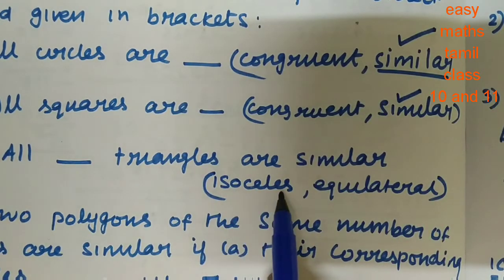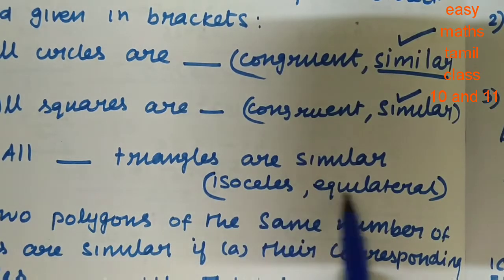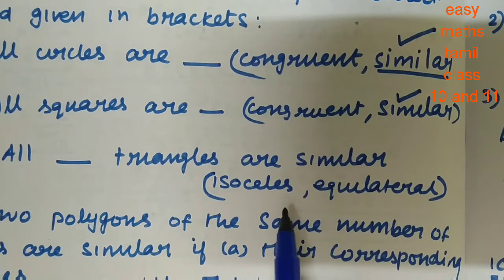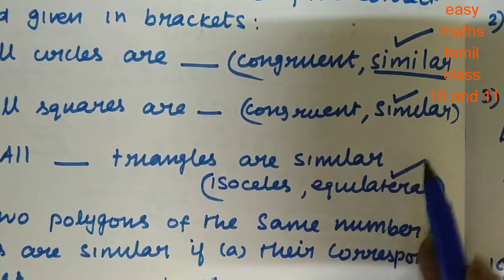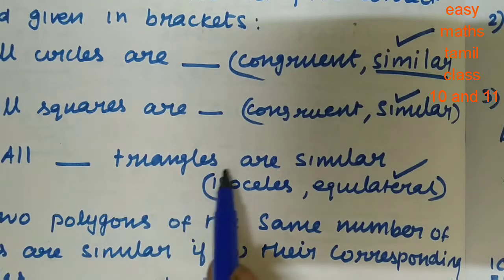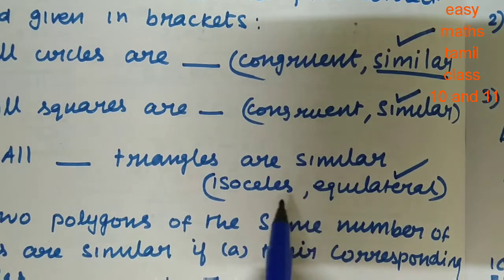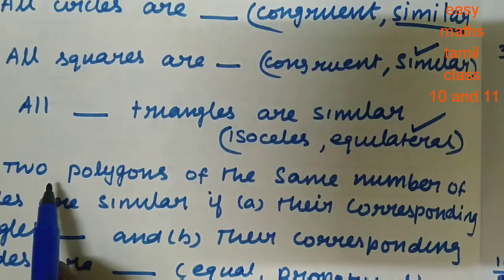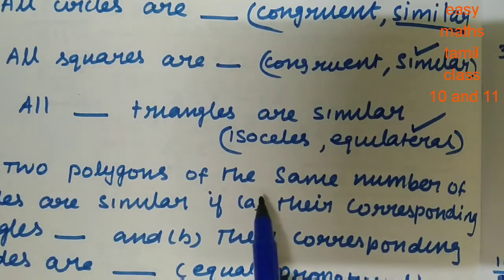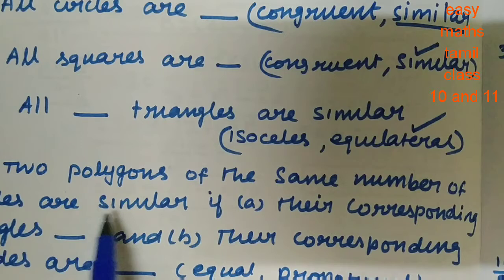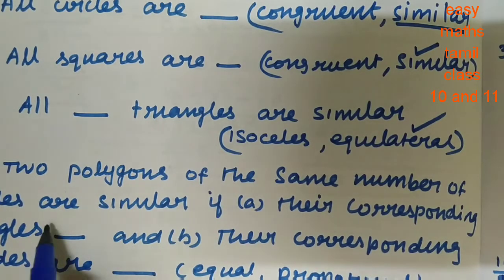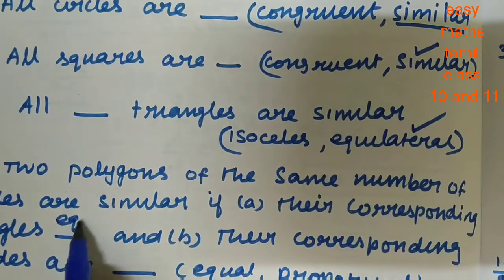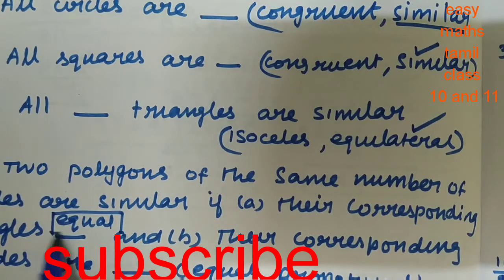All the triangles — isosceles or equilateral — which are similar? All equilateral triangles are similar. The two polygons of the same number of sides are similar if their corresponding angles are equal and their corresponding sides are proportional.